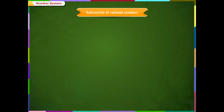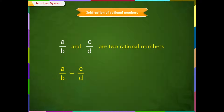Subtraction of Rational Numbers. If A/B and C/D are two rational numbers, then subtracting C/D from A/B means adding the additive inverse of C/D to A/B. The subtraction of C/D from A/B is written as A/B minus C/D. Simply, take the additive inverse of the number after the minus sign and add them.